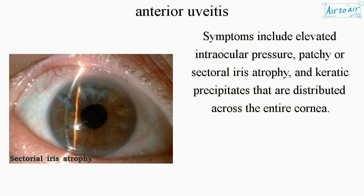Symptoms of viral anterior uveitis include elevated intraocular pressure, patchy or sectoral iris atrophy, and keratic precipitates distributed across the entire cornea.